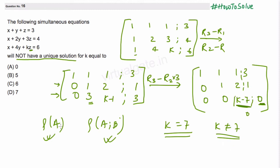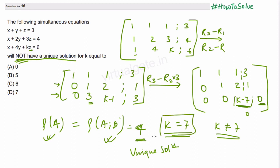If k is not equal to 7, then k minus 7 is not zero, and we get rank equal to 3 — rank of A equals rank of augmented matrix equals 3 — giving us a unique solution. Since we don't want a unique solution, the answer is k equals 7, making option D the correct answer.